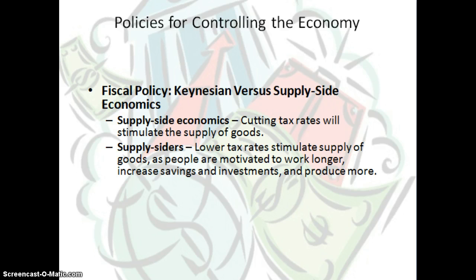In regards to fiscal policy, there is supply-side economics, in which cutting tax rates — especially for the wealthy — will stimulate the supply of goods. Republicans favor this much more than Democrats. Supply-siders say that lower tax rates stimulate the supply of goods, and as people are more motivated to work longer, they increase their savings and investments and produce more. It really comes down to which side you fall on: Keynesian government spending or Republican supply-side economics.